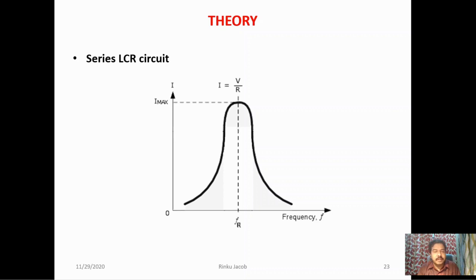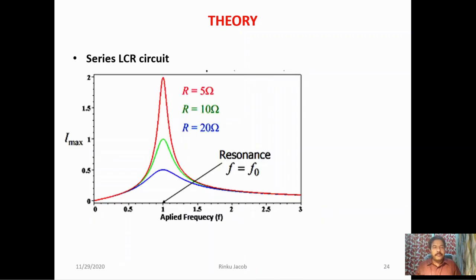The current in the circuit is maximum at a particular frequency called the resonant frequency, denoted F_r. When this frequency is applied, the LCR circuit's impedance becomes minimum — equal to the resistance only — so current is maximum. For all other applied frequencies, the current reduces. Varying the frequency from minimum to maximum produces the frequency response curve.